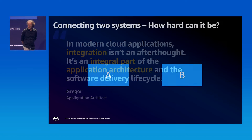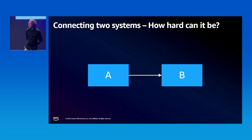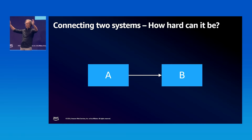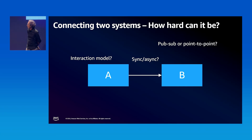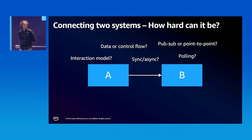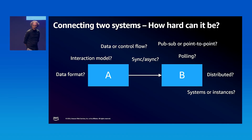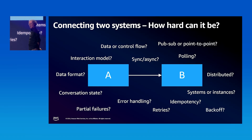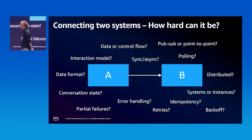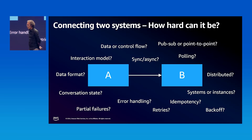We go back to our two blue boxes and the line. Even instead of going broad, if we go a little bit deeper, we can see quite a few questions: Is this synchronous or asynchronous? What's the interaction model — point to point or pub sub? Does this show data flow or control flow? What about data formats? Is B the system or the instance? What about errors — does this always go left to right, or does it have to happen twice because it didn't work the first time?